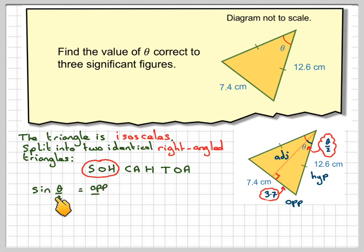Writing down the ratio, sine of the angle which is theta over two is equal to opposite over hypotenuse.